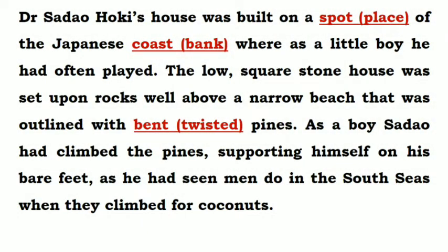The story takes place in the year 1941 when the Japanese attacked Pearl Harbor. At that time, Americans and Japanese were enemies and wanted to kill each other. Here is a story of a Japanese doctor named Sadao Hoki. Let's begin with the first paragraph: Dr. Sadao Hoki's house was built on a spot on the Japanese coast where, as a little boy, he had often played.